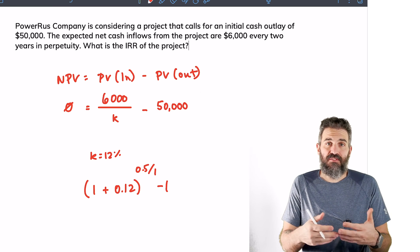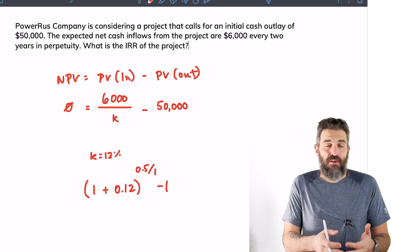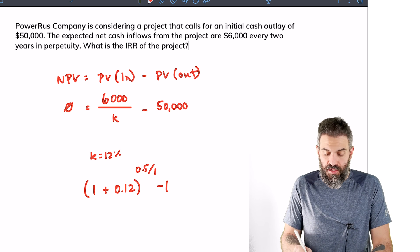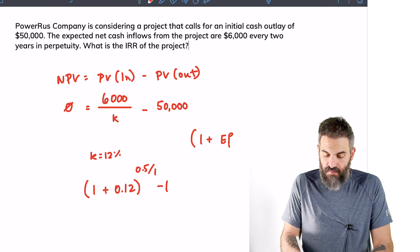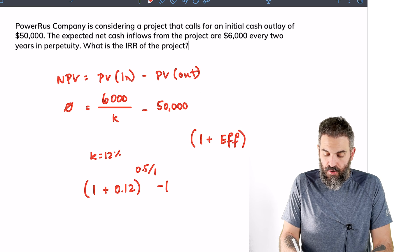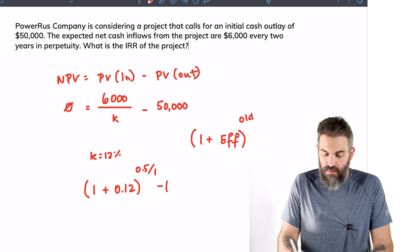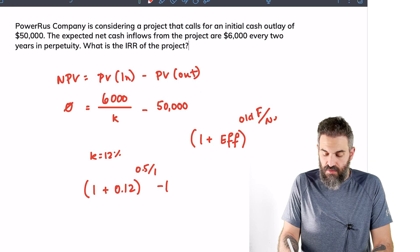The formula I'm using is 1 plus the effective rate to the power of old frequency divided by new frequency. The frequency we have is 0.5 because it's a two-year rate, over the frequency we want, which is just 1.